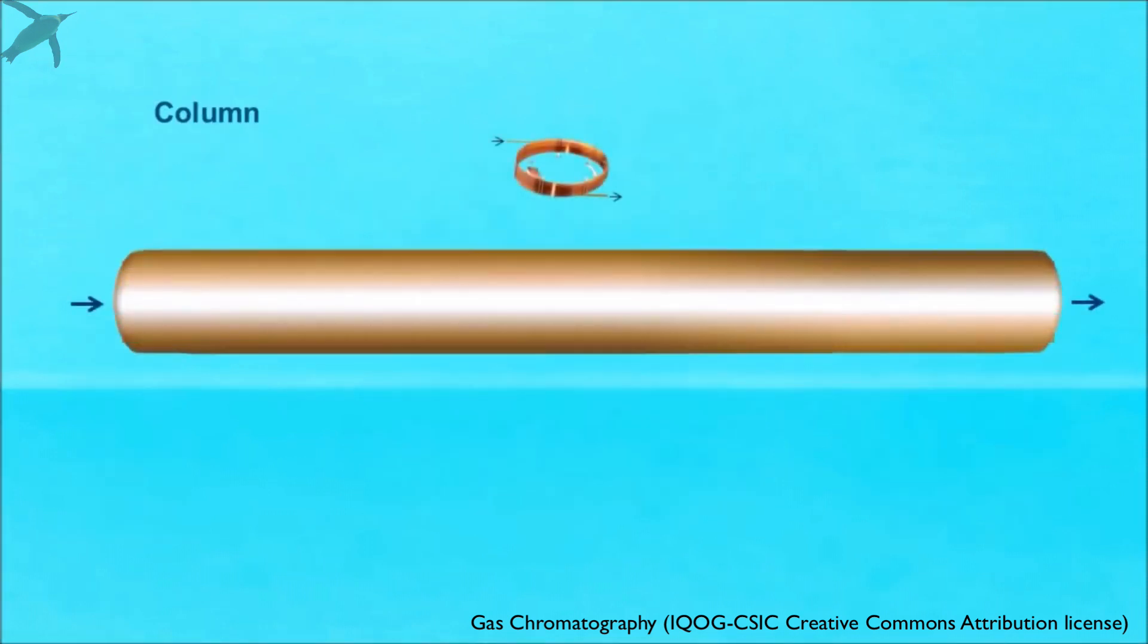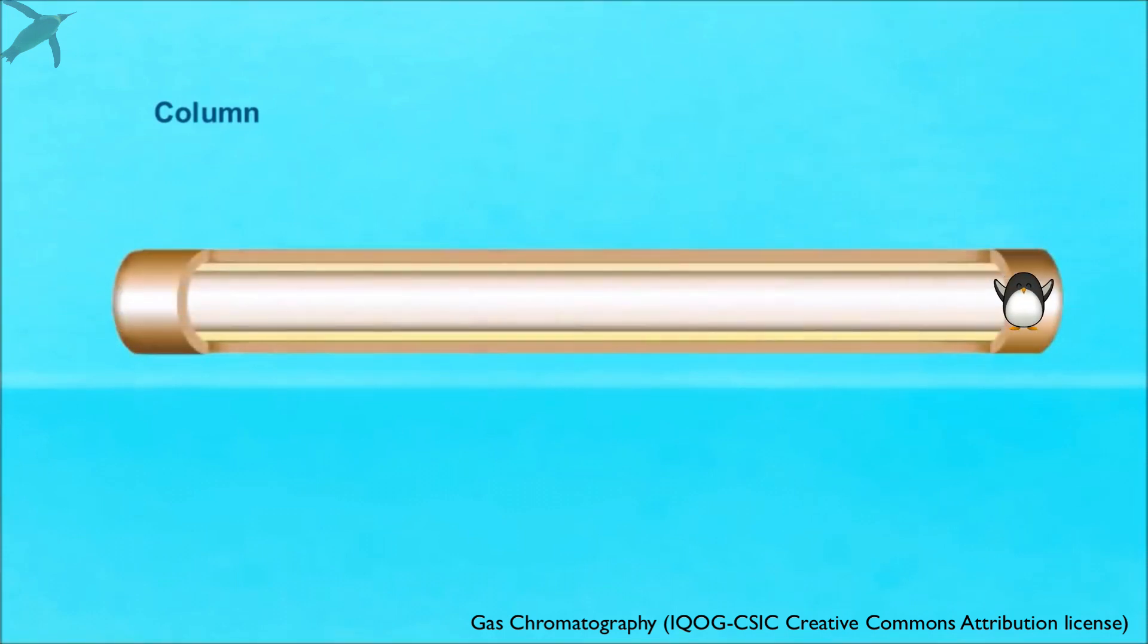The separation happens in the column, so let's cut out a short piece and look at it. If we make a cross-section, we see that the stationary phase is bound to the inner wall of the column, and the carrier gas is flowing through it. When we inject the sample, it gets vaporized and enters the column.